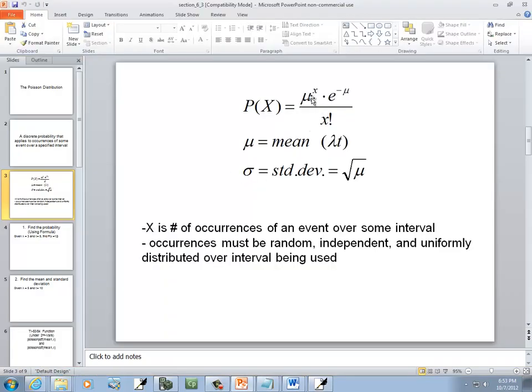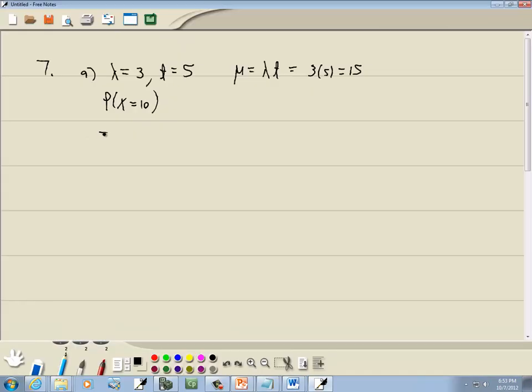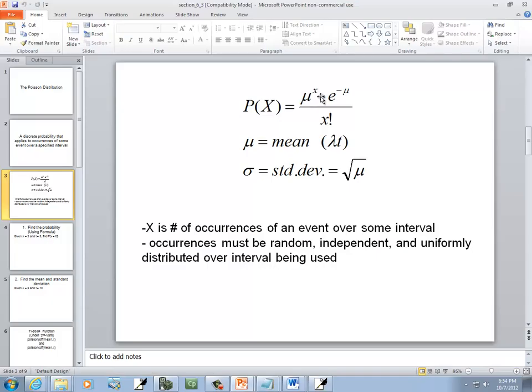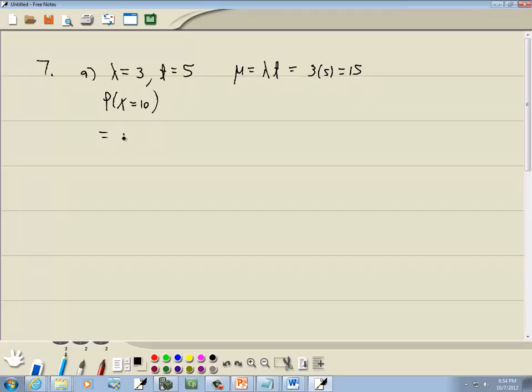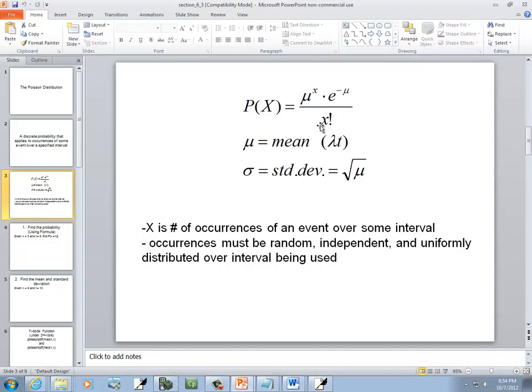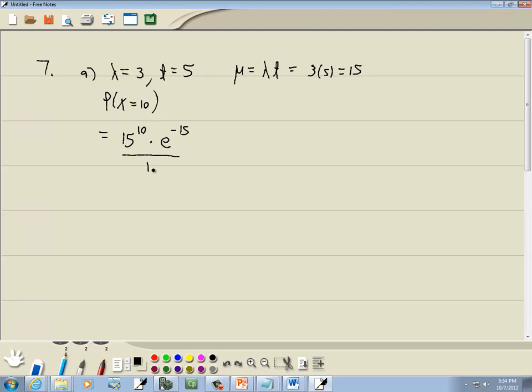Now from our formula, this is equal to mu to the X power. Well, mu we just said was 15 to the X power, X is 10, times E to the negative mu power. And we said mu was 15, so that's negative 15, over X factorial. So this would be 10 factorial. Now all I'm looking for here is just the setup. You don't have to actually plug in your calculator.